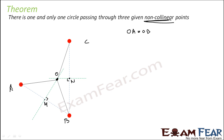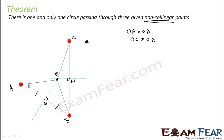Triangle AOM and triangle BOM — you will see that both are congruent. Why? This common side is 90 degrees and this side is equal. So using the congruency of triangles, you can prove that both sides are equal. Thus OA will be equal to OB. Similarly, if you take triangles BON and CON, you can prove that OC is equal to OB. You can prove these two triangles are congruent.